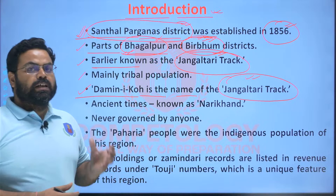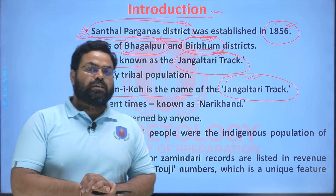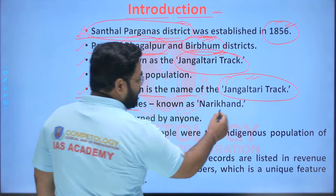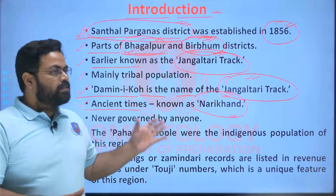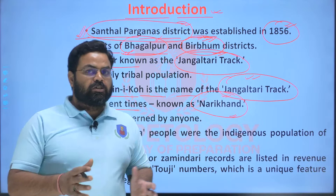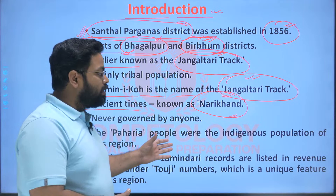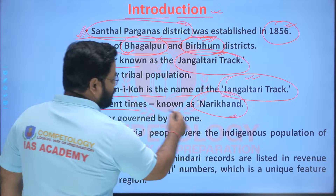Damineko was a terminology used by the British administration to recognize those areas or regions which were under the direct control of the British administration or had been declared as government property. The ancient name of this region was Narikan. These terminologies should be kept in mind because they can be asked from the point of view of the history of Jharkhand — questions sometimes overlap between sections, so they could appear in history questions as well.